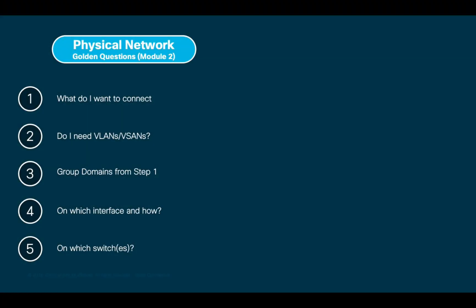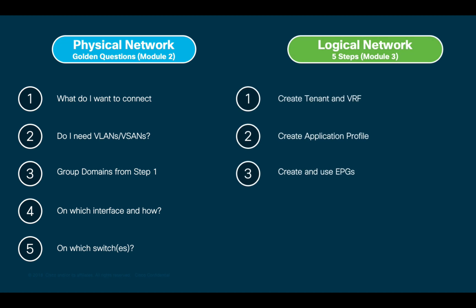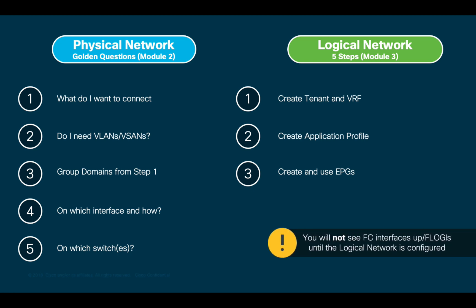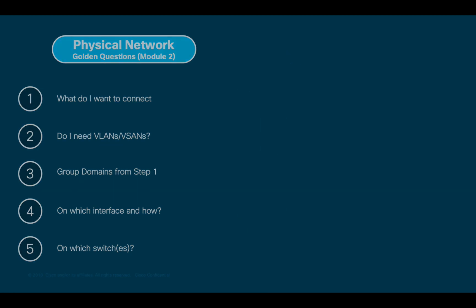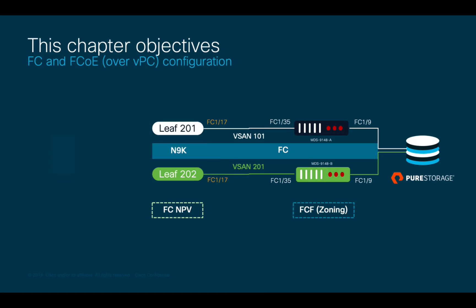To perform the physical network configuration, we will follow the same golden questions we have learned throughout this module, and then in module 3, we will continue this configuration through the logical network. It is important to mention that you will not see NPV FLOGIs on ACI, nor Fiber Channel interfaces come up, until you finalize logical network configuration.